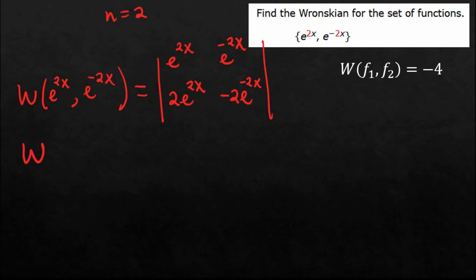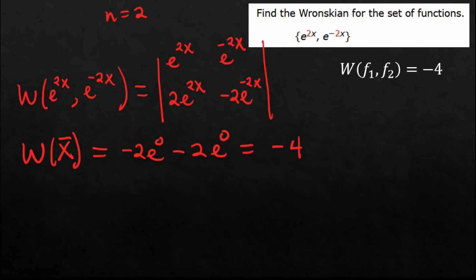So, the Wronskian — and I'm just going to label those vectors or functions with x-hat. We compute this: we get negative two times e^(2x), and then multiplying same-base exponentials you add the exponents, so that's e^(2x - 2x), which is e^0. And then minus two times e^0. Well, e^0 is just one, so all we have is just negative four.